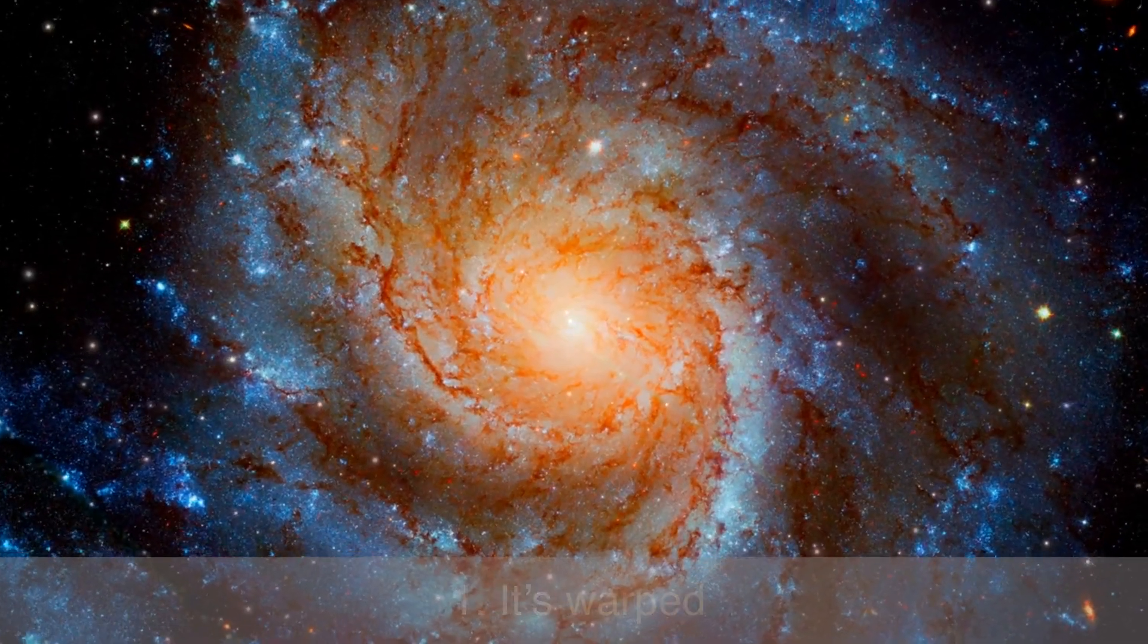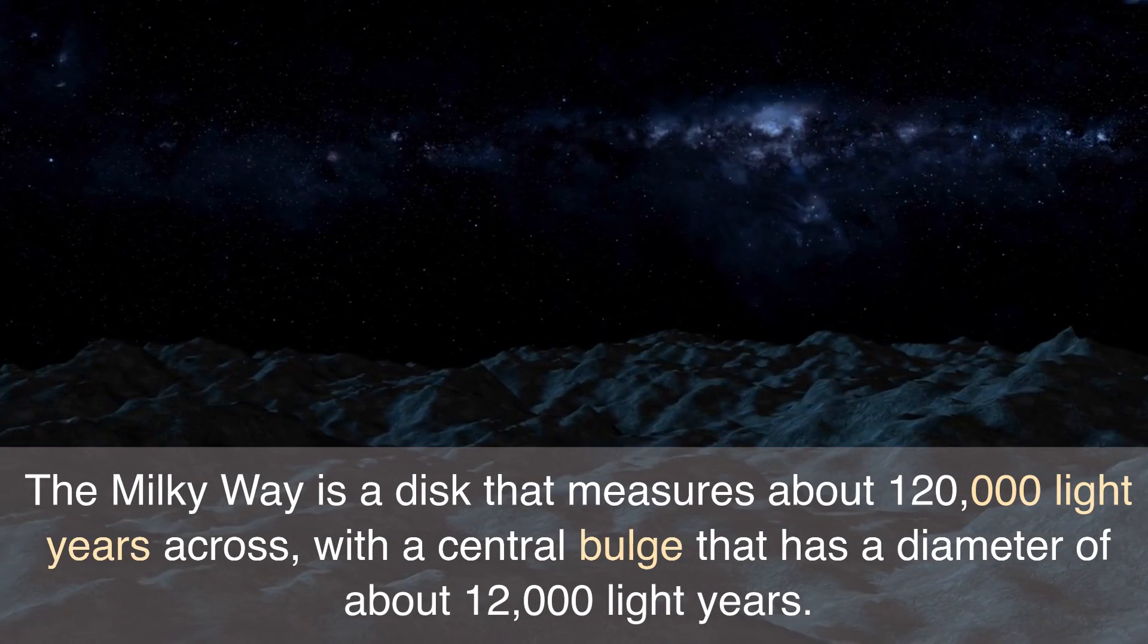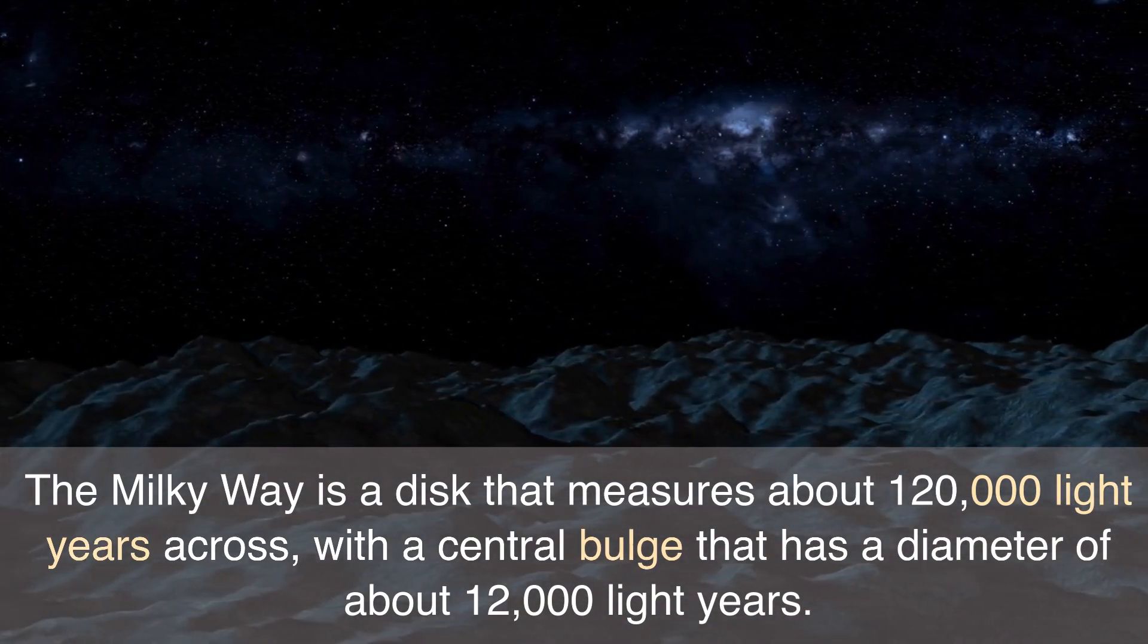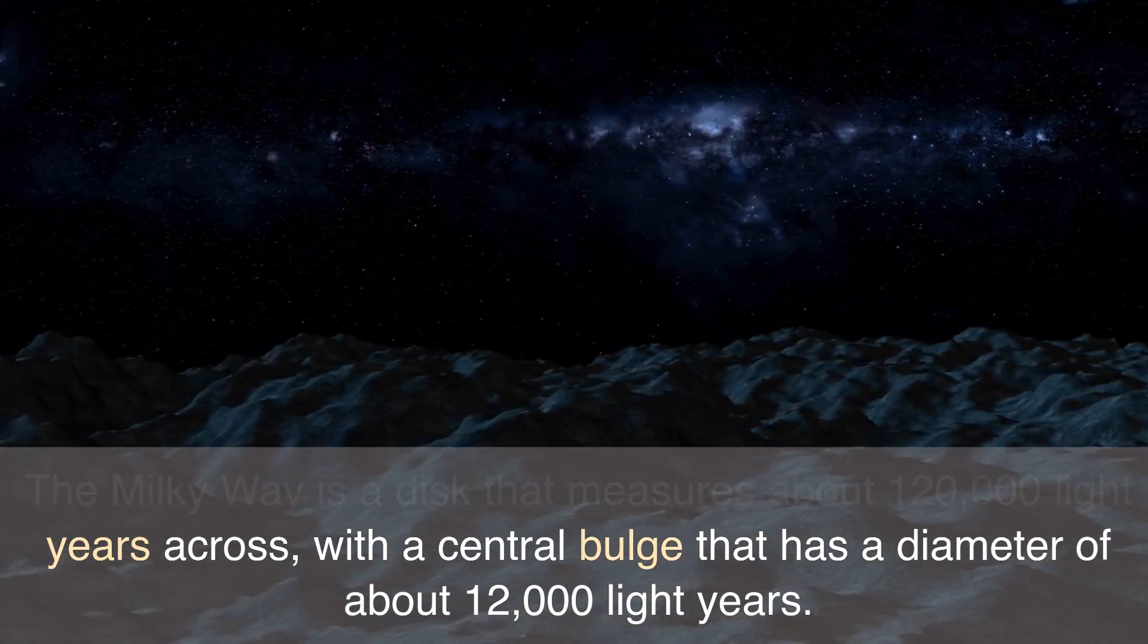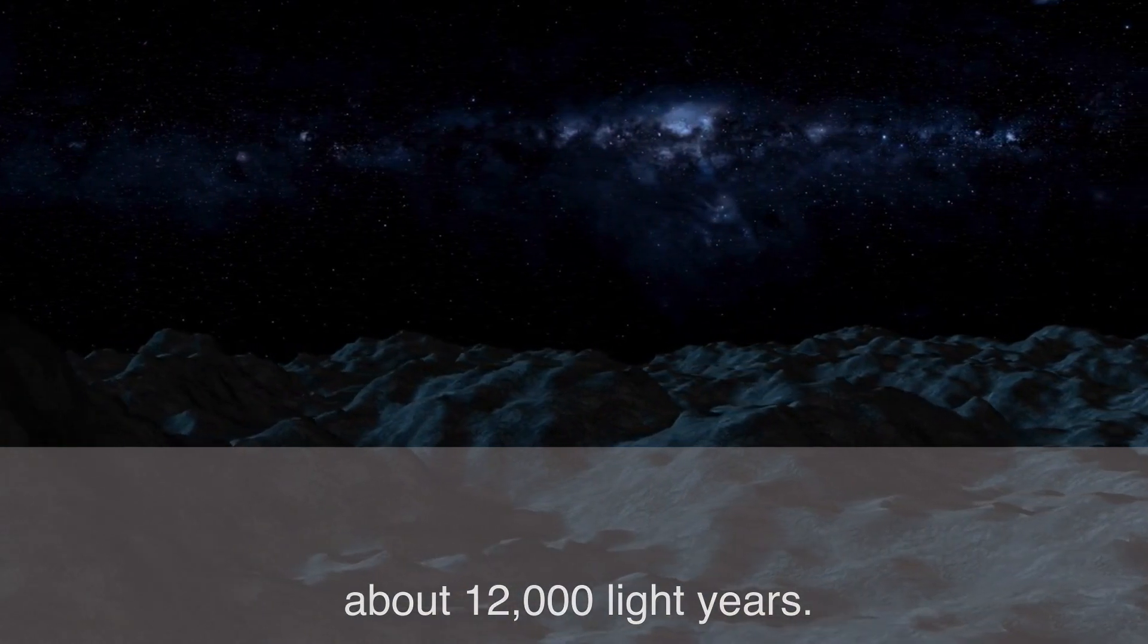Number 1: It's warped. The Milky Way is a disk that measures about 120,000 light-years across, with a central bulge that has a diameter of about 12,000 light-years.